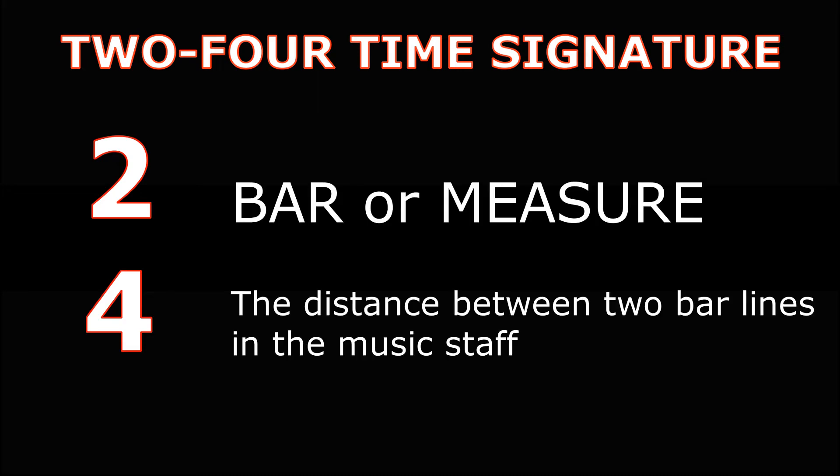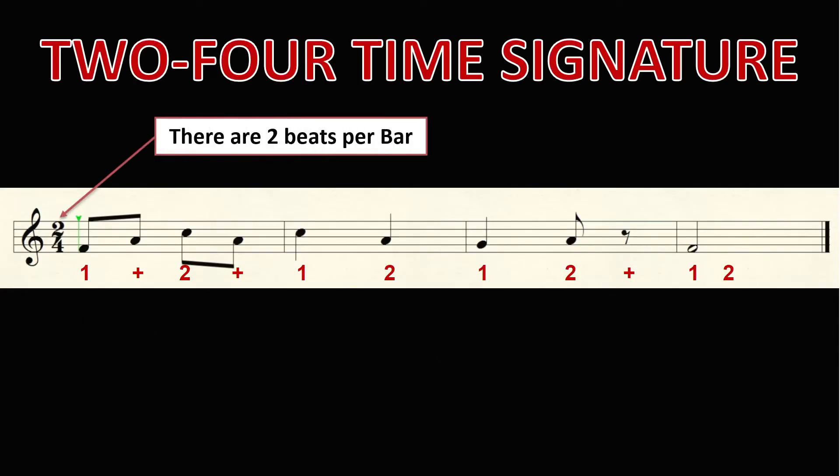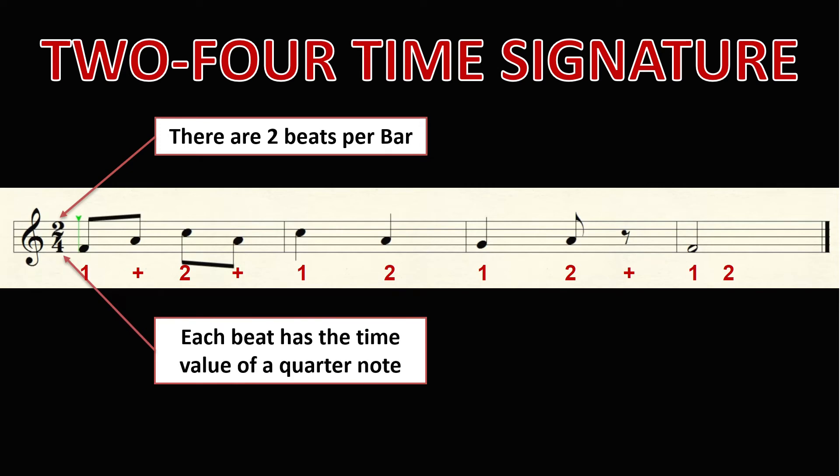Another simple time signature is the 2-4. This symbol is represented by two numbers, 2 and 4. The top number 2 and the bottom number 4. To understand this symbol, we need to refresh our minds with a bar or measure, which is the distance between two bar lines in the music staff, and the values of the notes and or rests that we can write on the staff. So the top number 2 tells the musician that there can only be a maximum of two beats or counts in one bar or measure. The bottom number 4 tells the musician that each beat or count has the time value of a quarter note.